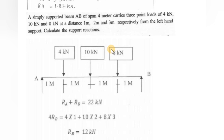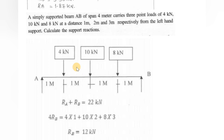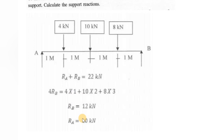Applying equilibrium conditions: ΣV = 0 gives RA + RB = 4 + 10 + 8 = 22 kN. Taking the algebraic sum of moments about point A: RB × 4 = (4 × 1) + (10 × 2) + (8 × 3), which gives the total clockwise moment. Solving: RB = 12 kN.